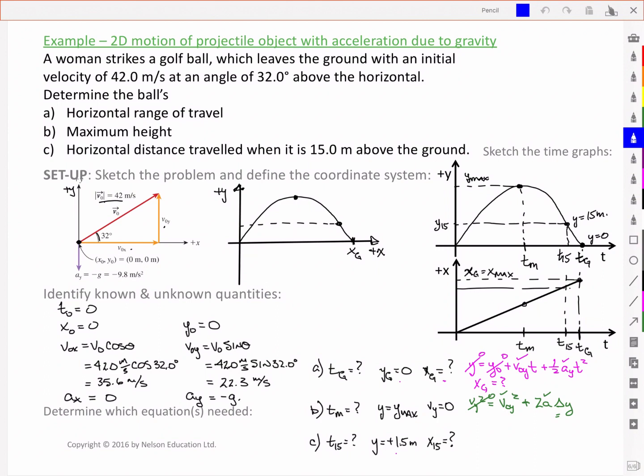In the last case, again we don't have the time but we want an x position. Let's again look to this equation. We always know our acceleration due to gravity. We do have an initial velocity. We know that our initial position is 0. And we know the y position in this case. So we should be able to find x15.